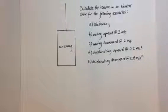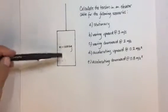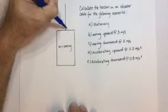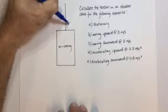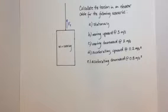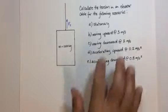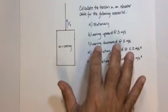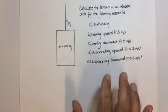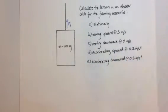Let's consider the tension in an elevator cable for the following scenarios. Here's an elevator with a mass of 1,000 kilograms being held up with a single cable. We're going to calculate the tension force in the cable for these cases: stationary, moving upward at 3 meters per second, moving downward at 2 meters per second, accelerating upward at 0.2 meters per second squared, and accelerating downward at 0.8 meters per second squared.